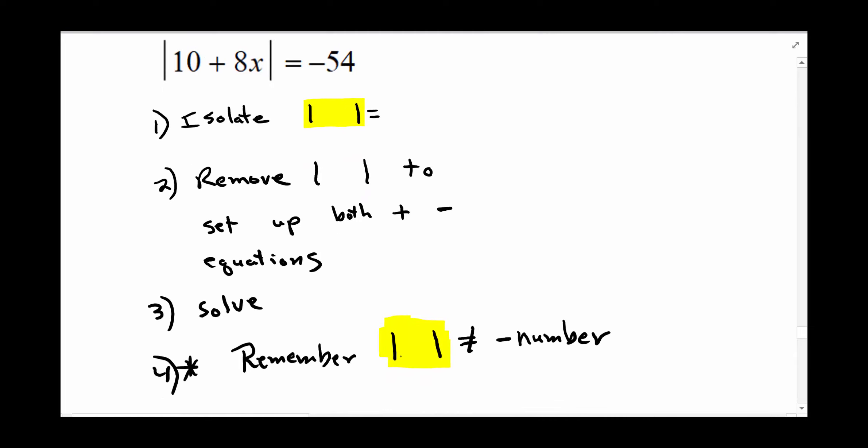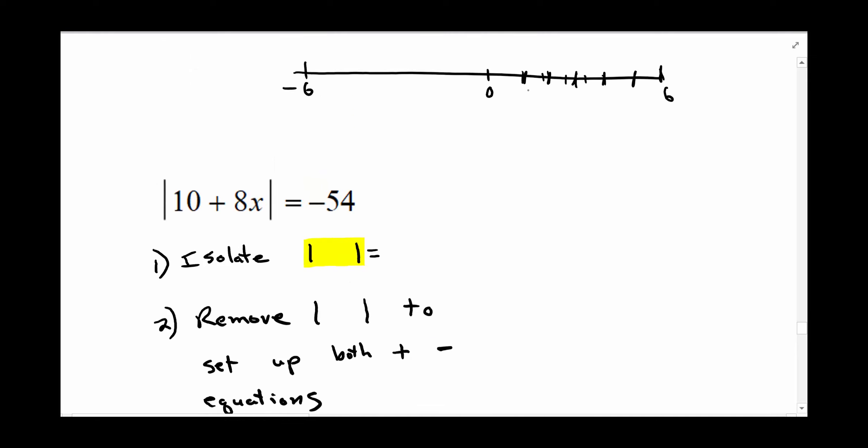absolute values cannot equal a negative number because distance is always positive. So this one right here, you could immediately write no solution because the absolute value of all of this cannot be equal to negative 54.